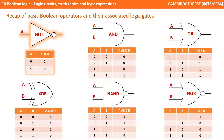Let's start with a recap of the basic Boolean operators and their associated logic gates and truth tables. The simplest is the NOT gate — it simply reverses the input to the gate: 0s become 1s and 1s become 0s.